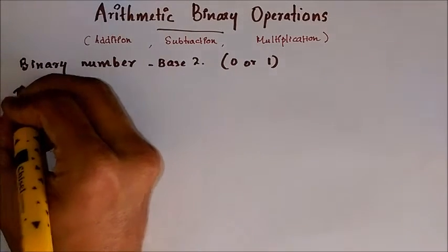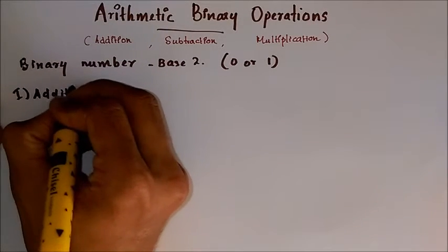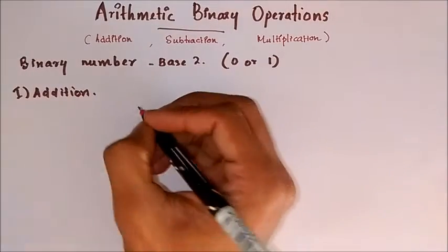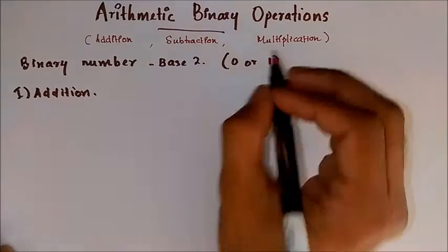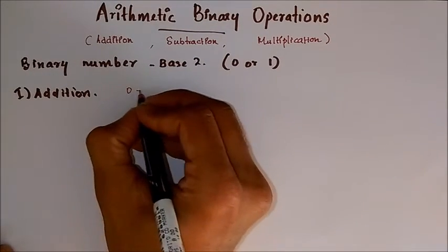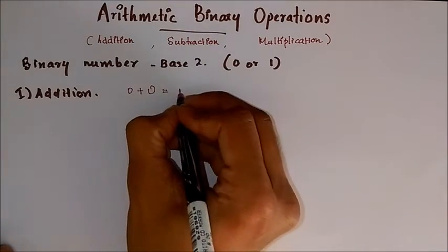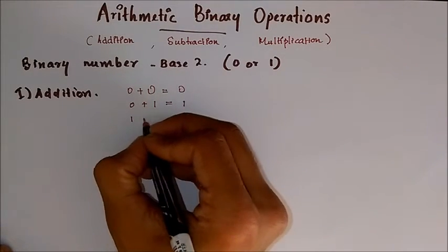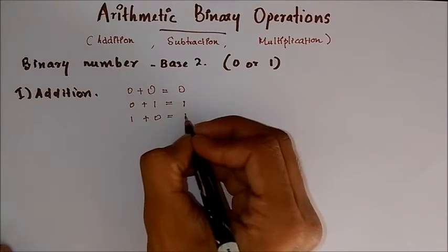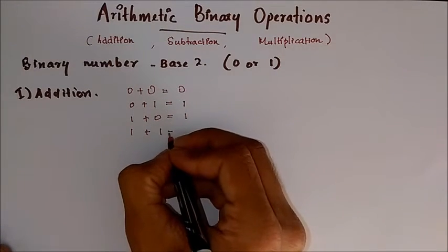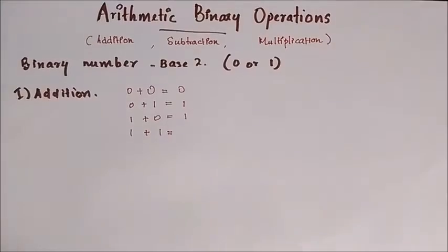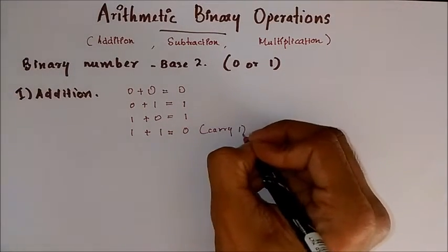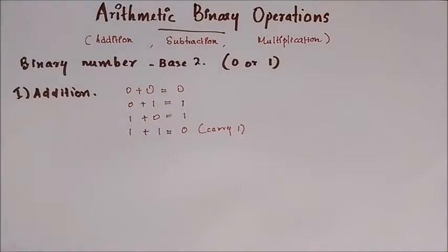First up is addition. For binary numbers, that is numbers with 0 or 1, the rules for addition are: 0 plus 0 equals 0; 0 plus 1 equals 1; 1 plus 0 equals 1; and finally, 1 plus 1 equals 0 with a carry 1. We will understand that when we are doing a problem.